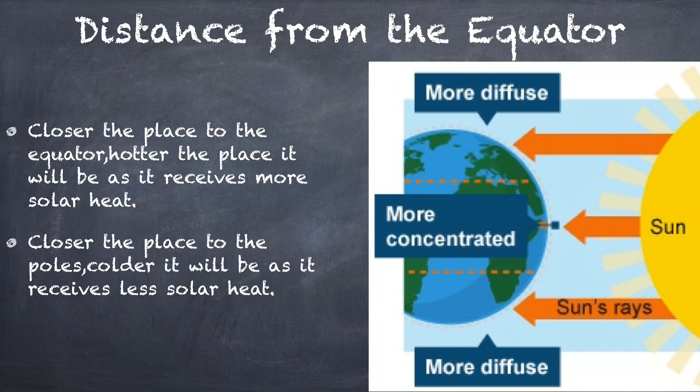As you can see in the diagram, the sun's rays are direct or vertical at the equator and slanting at the poles. The slanting rays have to heat up a larger area of the Earth's surface than the direct rays that fall on the equator. Hence, places near the equator get heated more than the places near the poles.